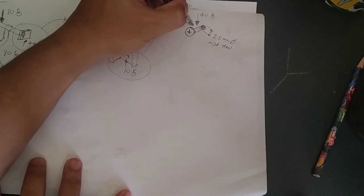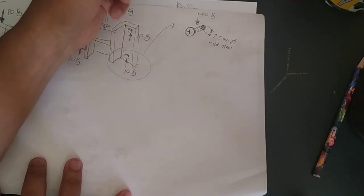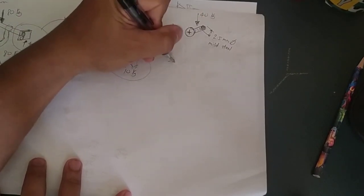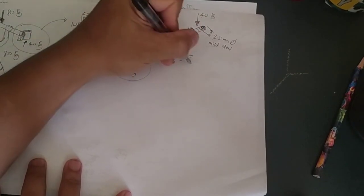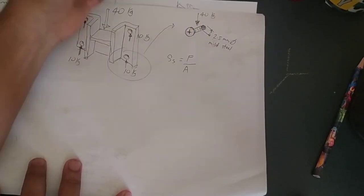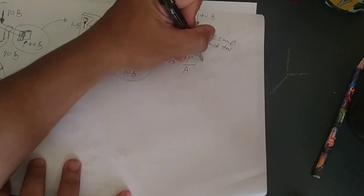So the first thing that we have to do is to calculate the shear stress experienced by this screw. So shear stress is equals to the force applied to it divided by the cross sectional area of the screw.